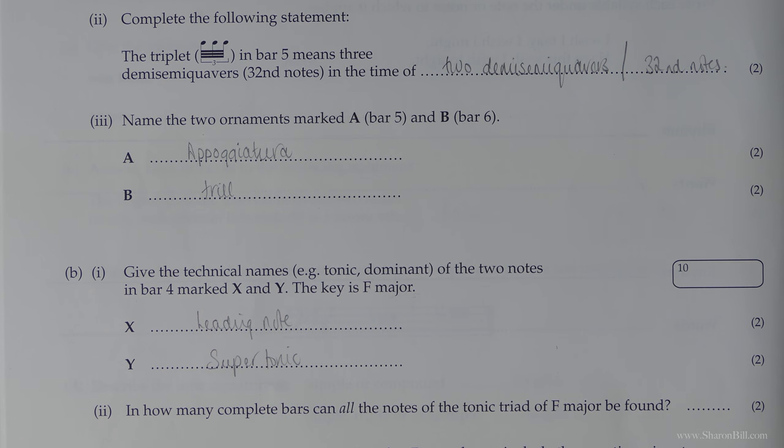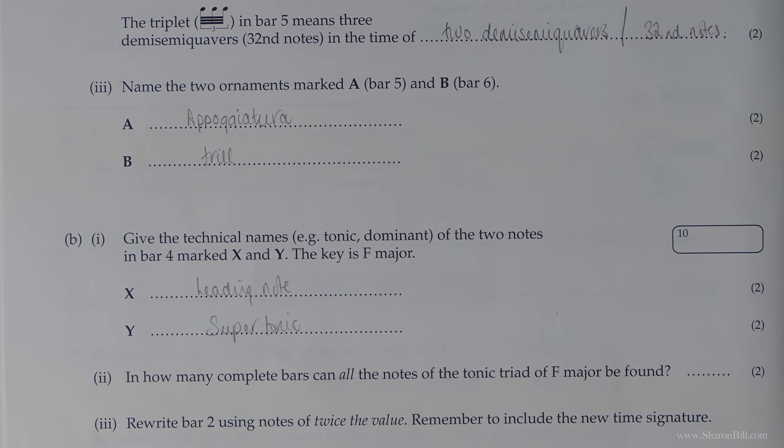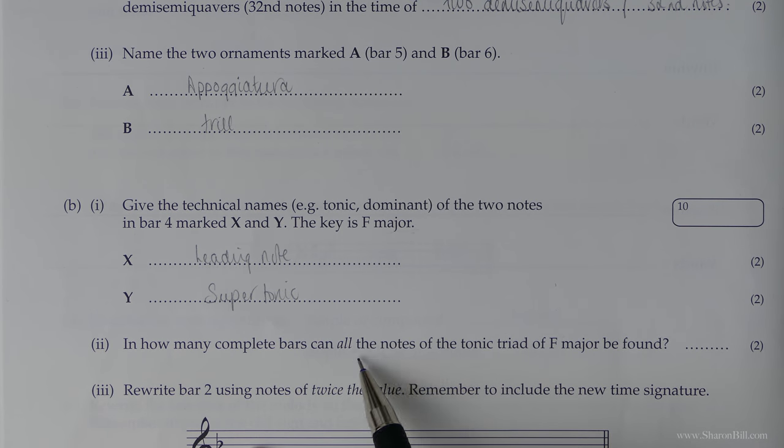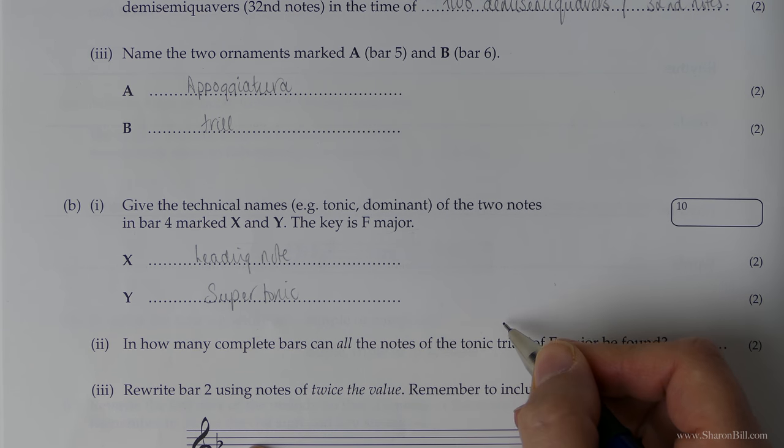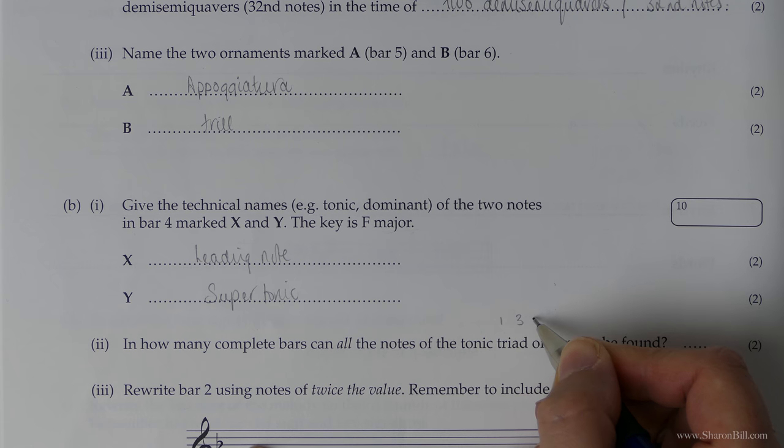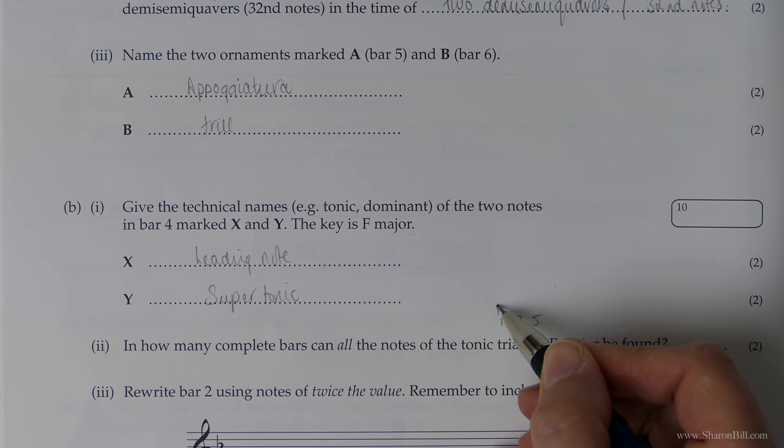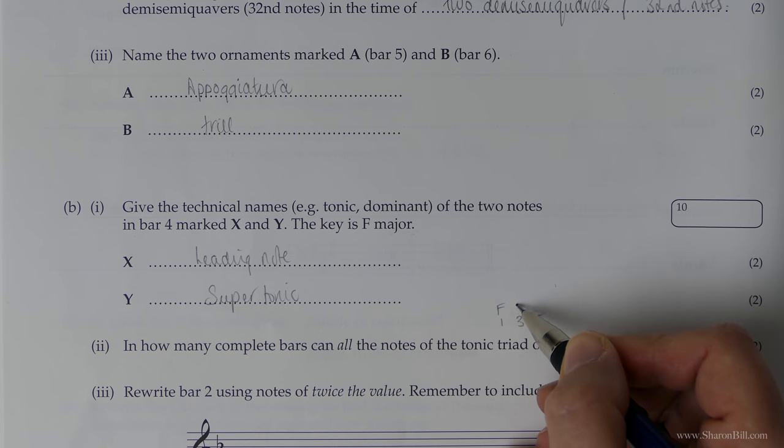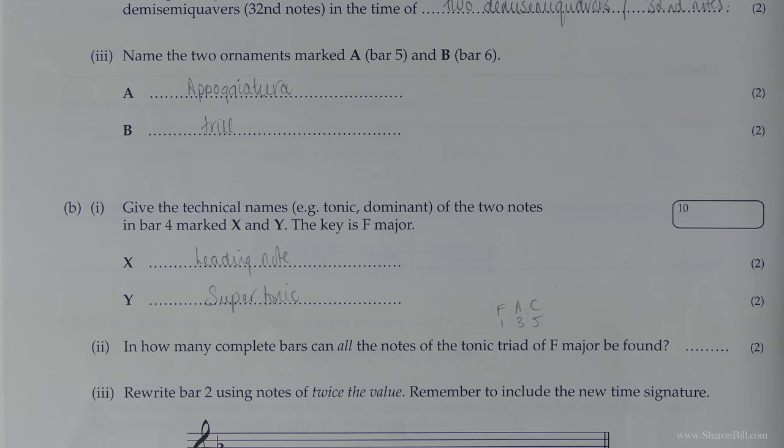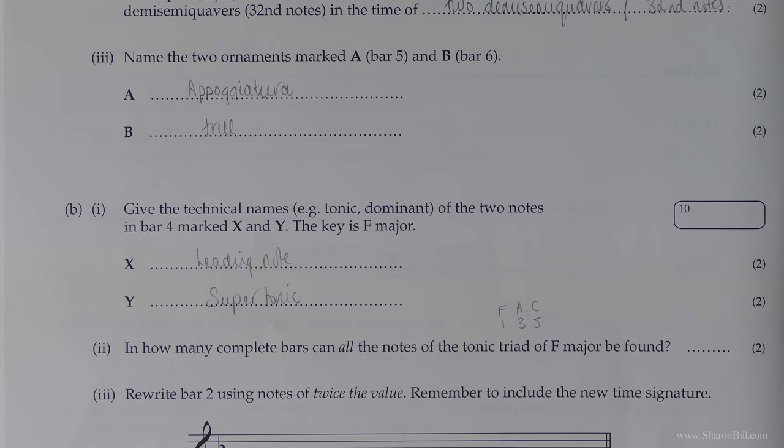In how many complete bars can all the notes of the tonic triad of F major be found? The tonic triad, if you remember, is built. The triad is built of the first, the third and the fifth. So F is the first. That's the tonic. F, G, A, B, C. F, A, C. So we're looking for how many complete bars all of those notes can be found.